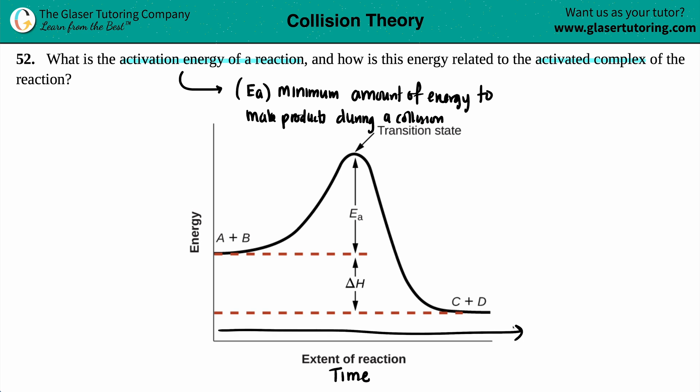you're starting with two components, which is A plus B, and you're going to C plus D. So in this generalized energy diagram, we have A plus B yields C plus D.